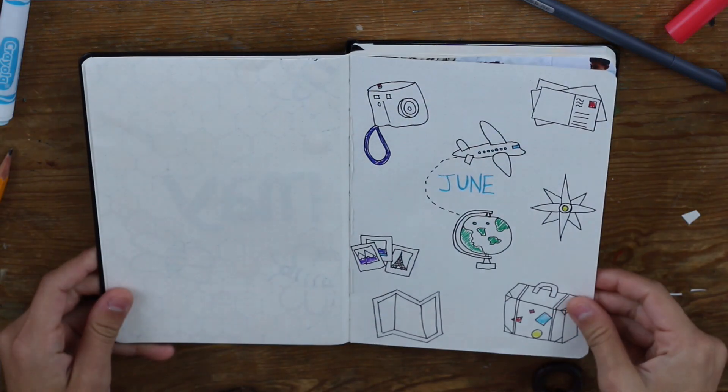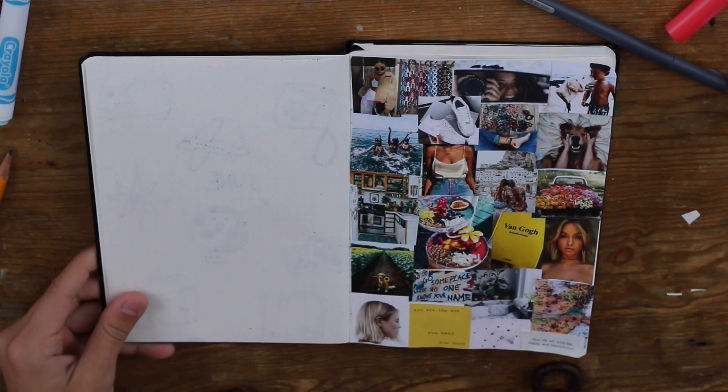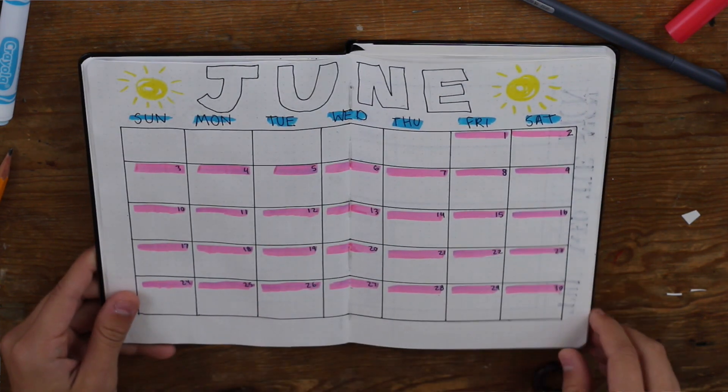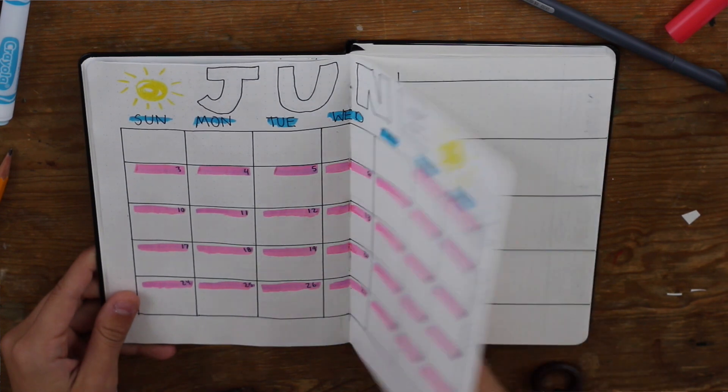This is going to be the final flip through. Starting off my intro page and then my inspiration page for June, which I just love. And then this is my monthly, and I really like how it turned out. Very bright, fun, colorful.